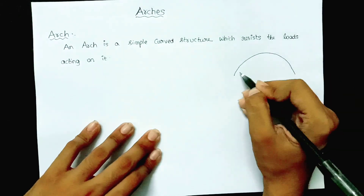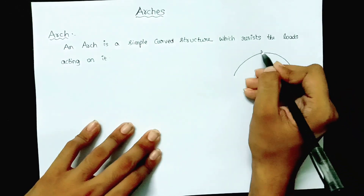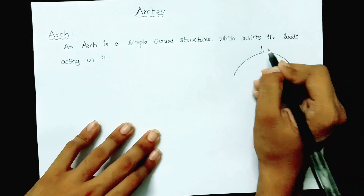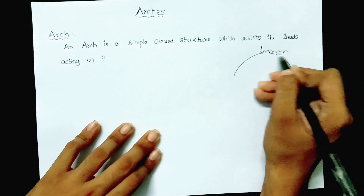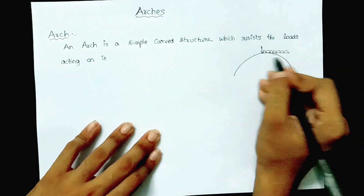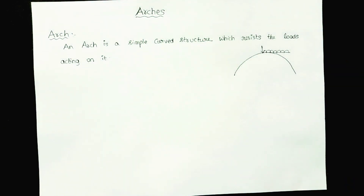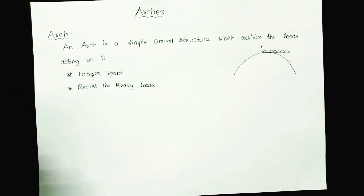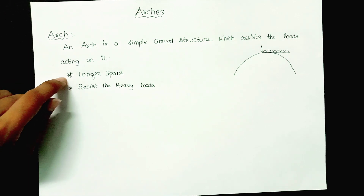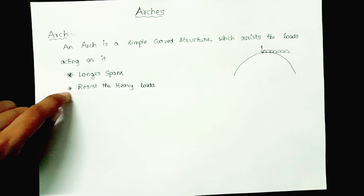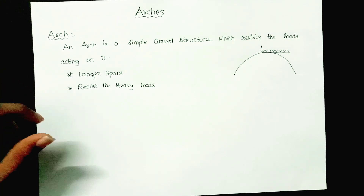On this structure there may be various loads: a point load, UDL, or uniformly varying load. Those loads are resisted by the arch action. The main advantage of providing an arch is that it can be constructed for larger spans and is used to resist heavy loads.